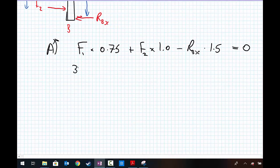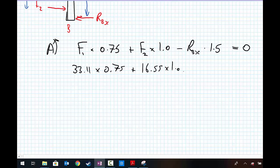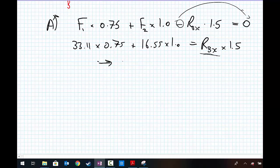Now I can substitute the values that I know. I have 33.11 times 0.75 plus 16.55 multiplied by 1 equals - I'm taking this minus sign and taking the whole term to the right-hand side - RBX multiplied by 1.5. I can rearrange this equation in terms of RBX, and this gets me that RBX equals 27.6 kilonewtons.